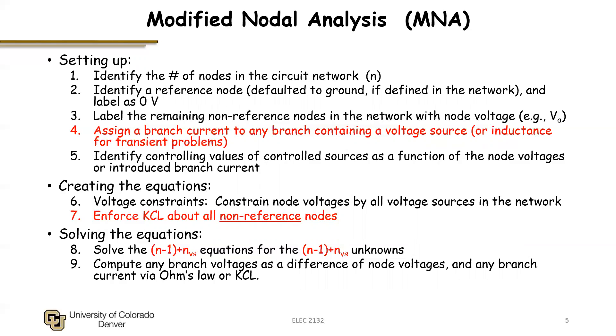The first is after we identify our nodes, label our nodes, our non-reference nodes and reference node, we then are going to introduce a branch current as an unknown for every voltage source. So at any voltage source of the network, I'm going to introduce an unknown branch current on that branch.